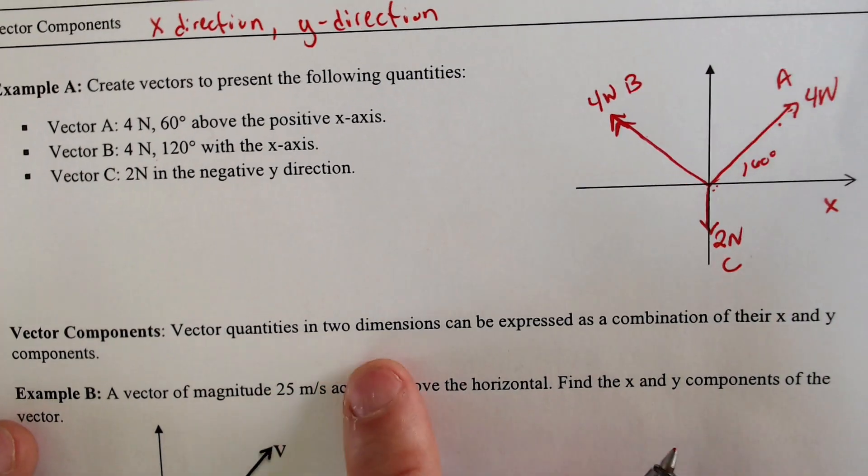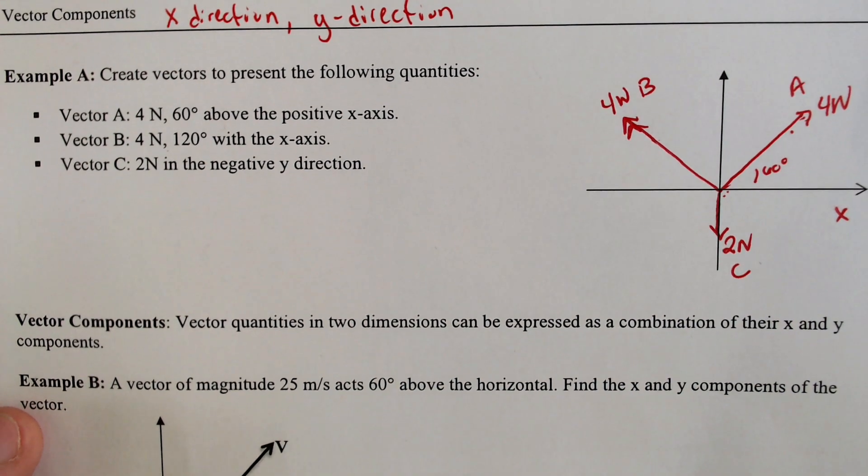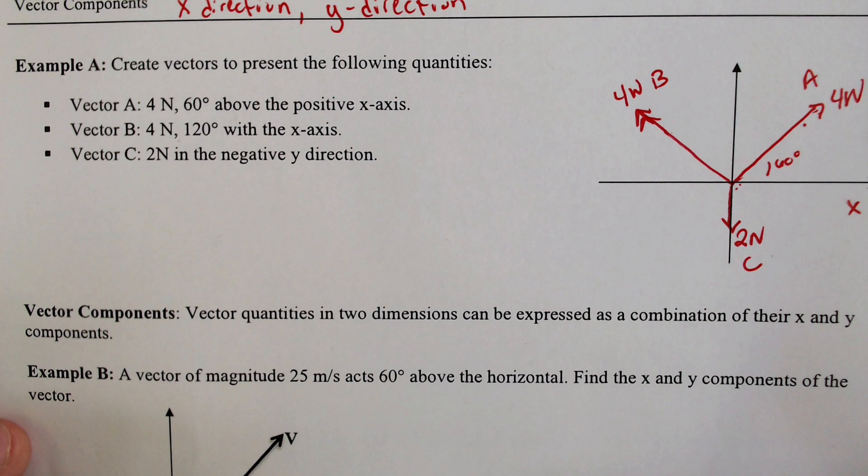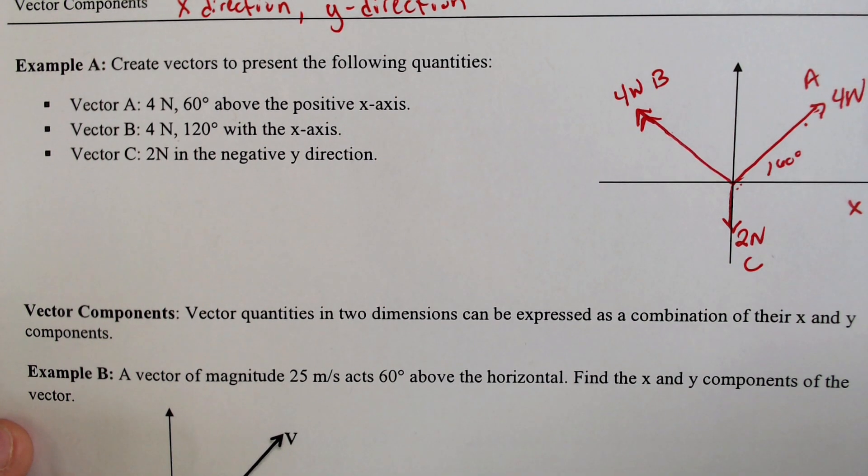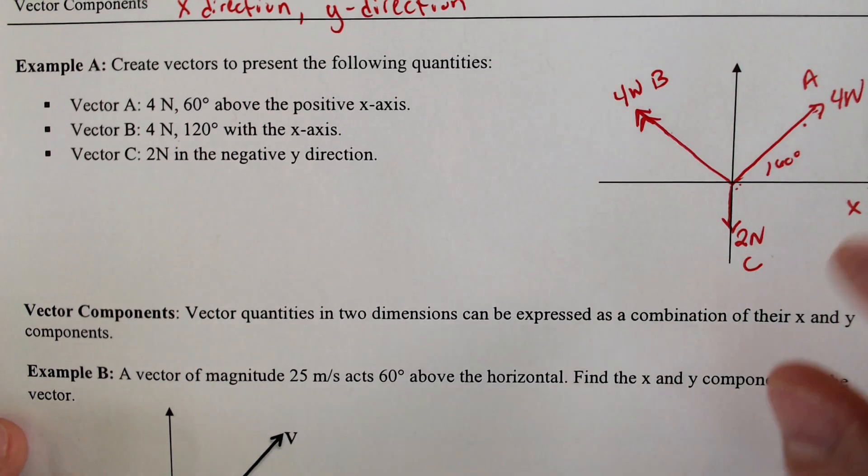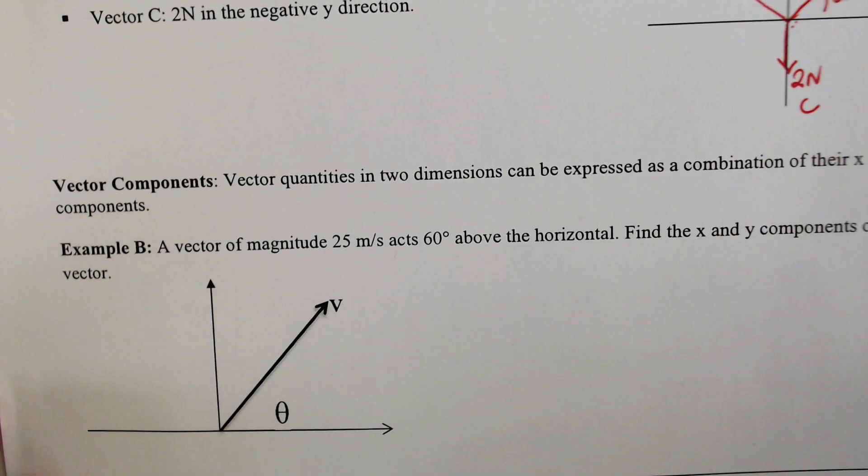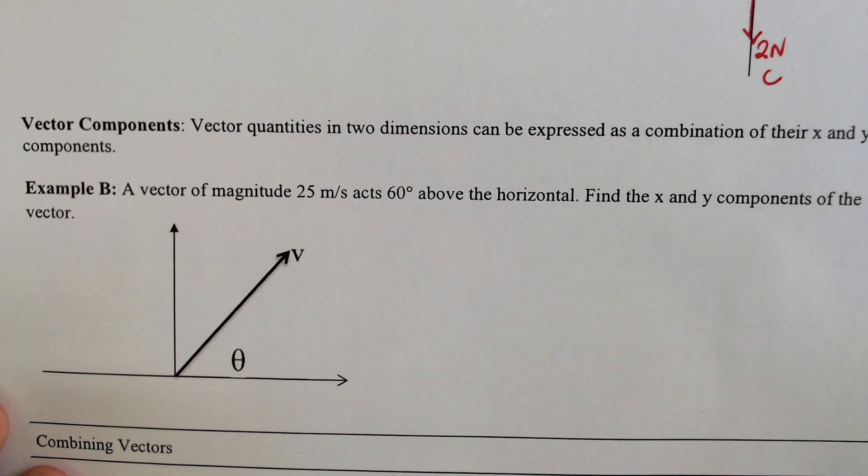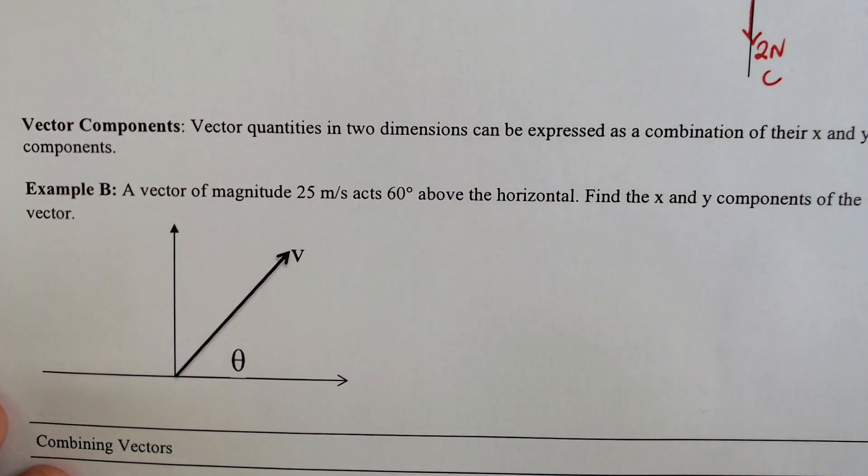Vector quantities in two dimensions can be expressed as a combination of their x and their y components, meaning you can combine vectors or add them together via adding the x and the y components, but in order to find the x and the y components, you need to go back to geometry and basic SOH CAH TOA, sine, cosine, and tangent operations.